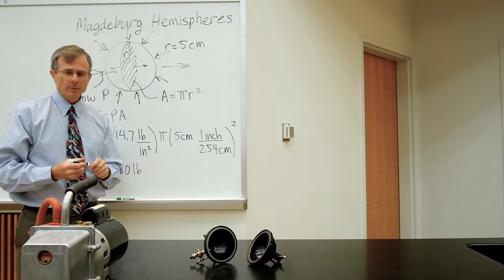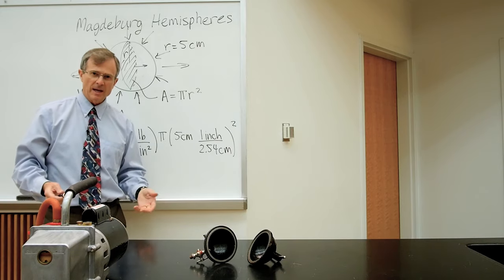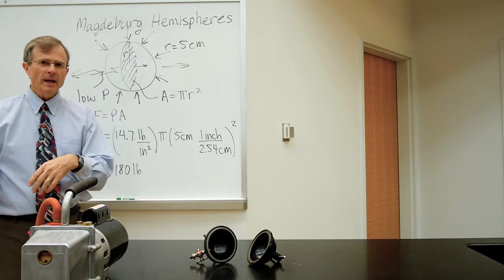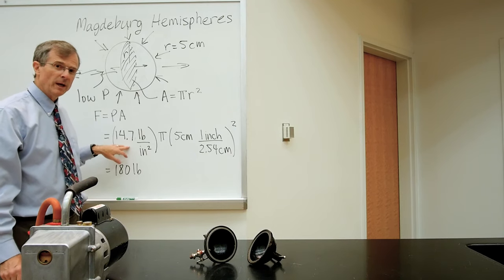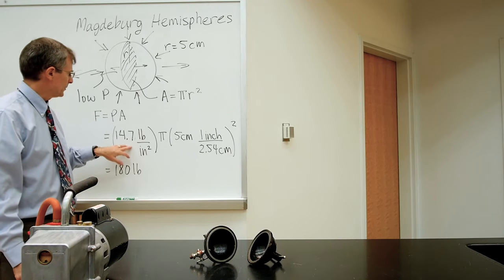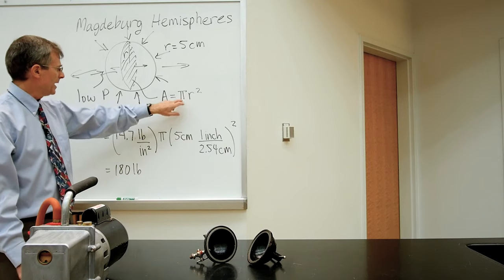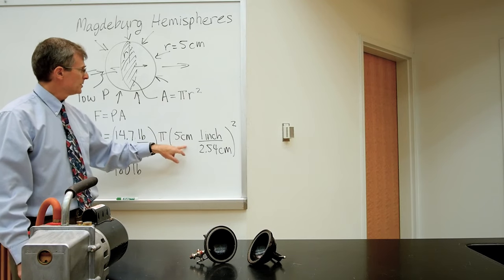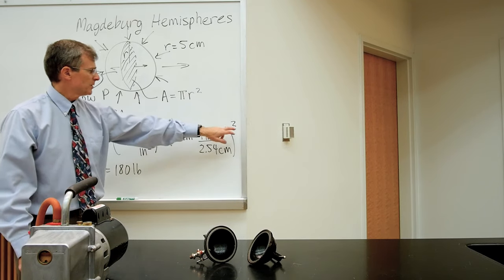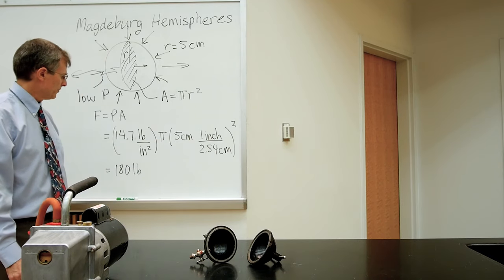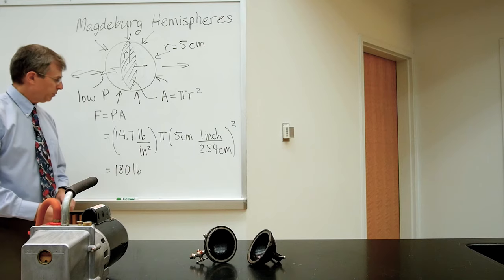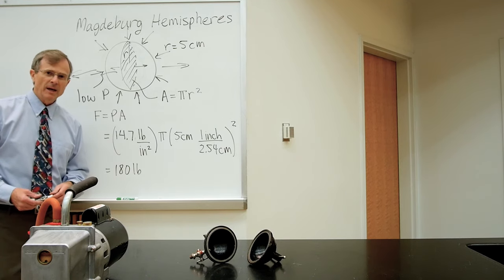Outside is 1.01 times 10 to the 5th pascals, newtons per square meter. If you convert that into pounds per square inch, it's about 14.7 pounds per square inch for atmospheric pressure. There's the pi for the area, here's the radius, and we have to square it and convert it to inches and square the conversion factor as well. Plug the numbers in, you get about 180 pounds.